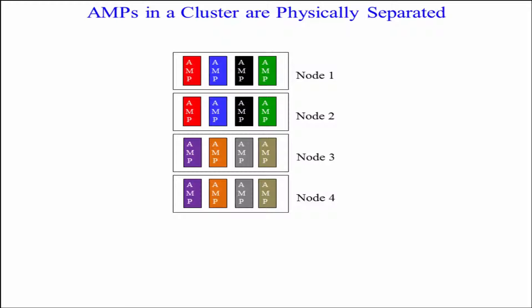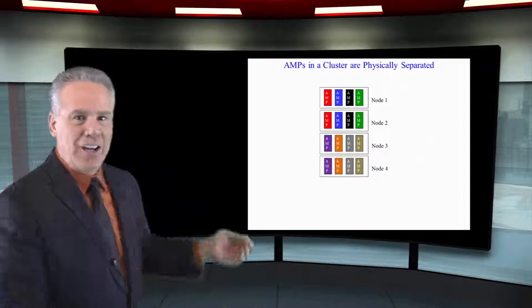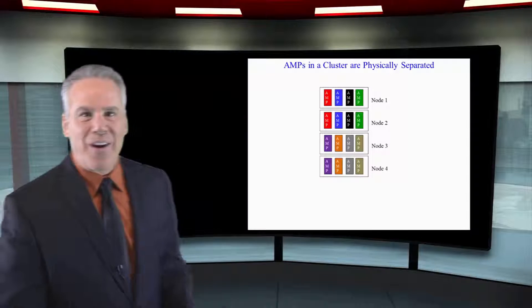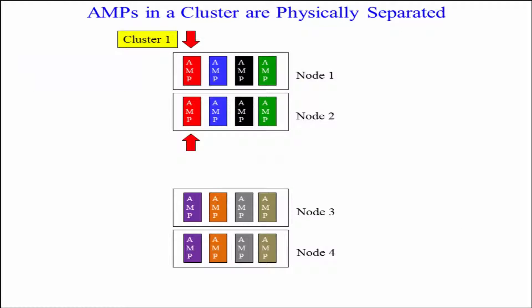Now, in node one, I've got one AMP in red and blue and black and green. And then in node two, I've got an AMP in red and blue and black and green. The two red AMPs are fallback protected, that's cluster one. The two blue AMPs, they're buddies, that's cluster two. Of course, we've got the black and that's cluster three and the green's cluster four.